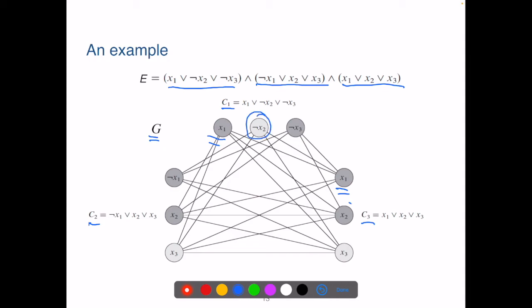For instance, not x2 and x2. Then this would be the graph G as the input instance of the k-Clique problem. Now, is this transformation answer-preserving?